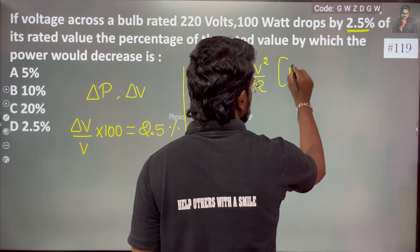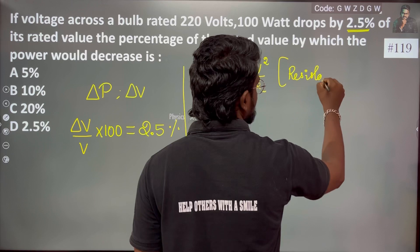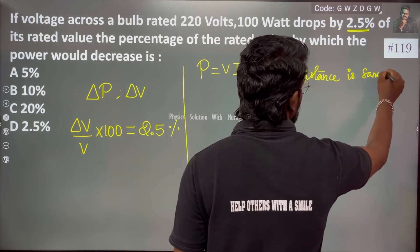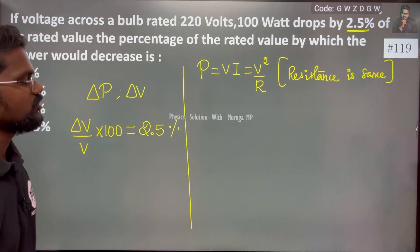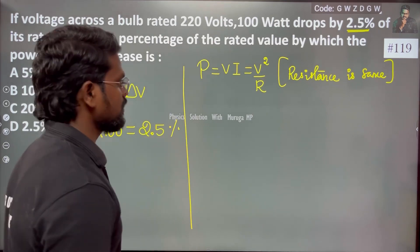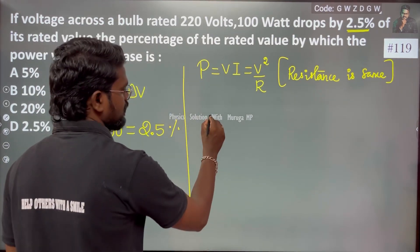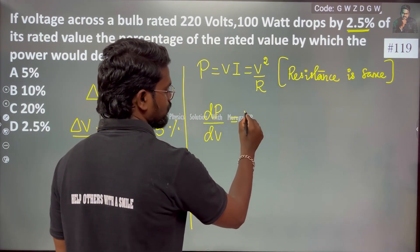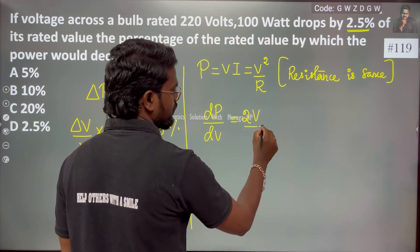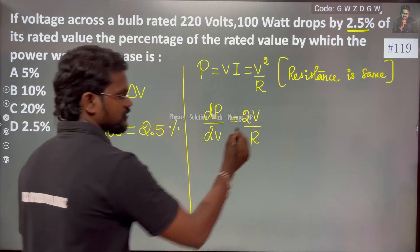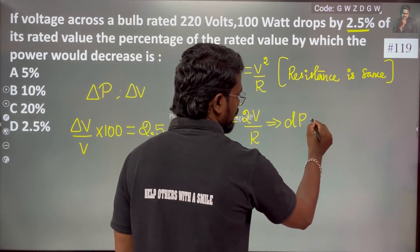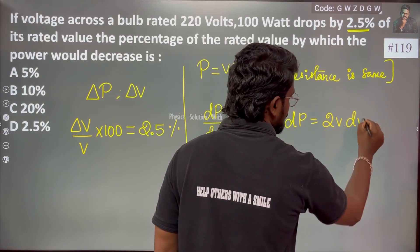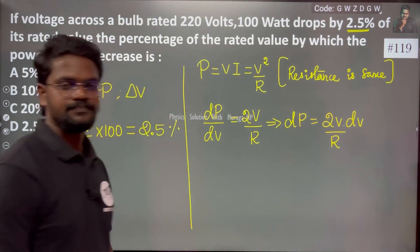The resistance is the same. So power is equal to V squared by R. Let us differentiate: dp with respect to voltage, which is equal to differentiating V squared gives 2V by R.